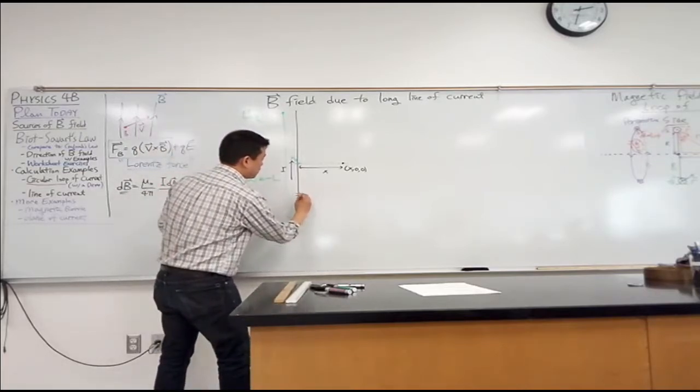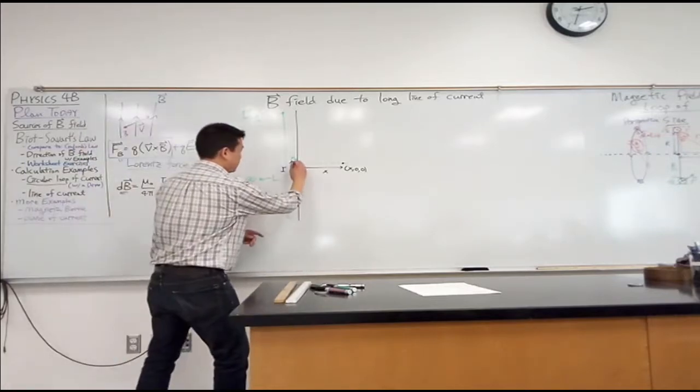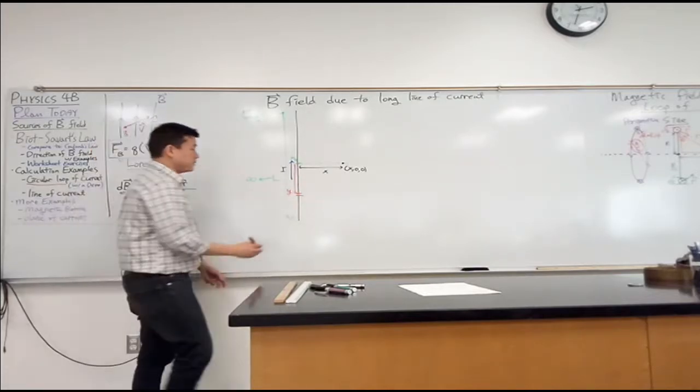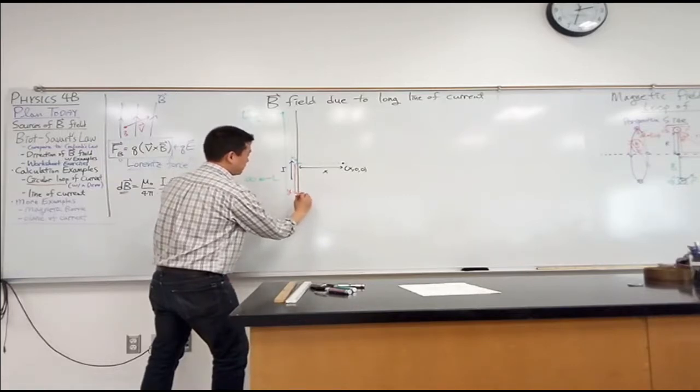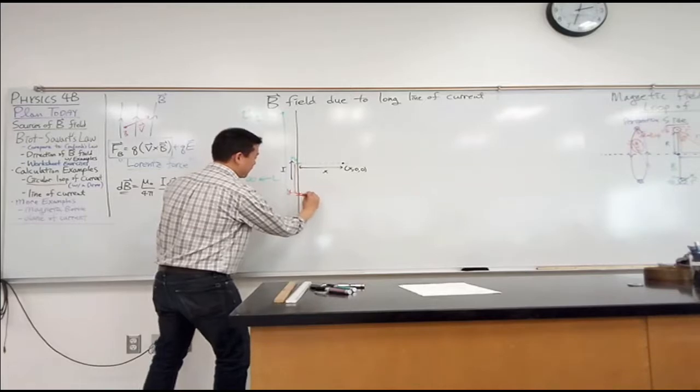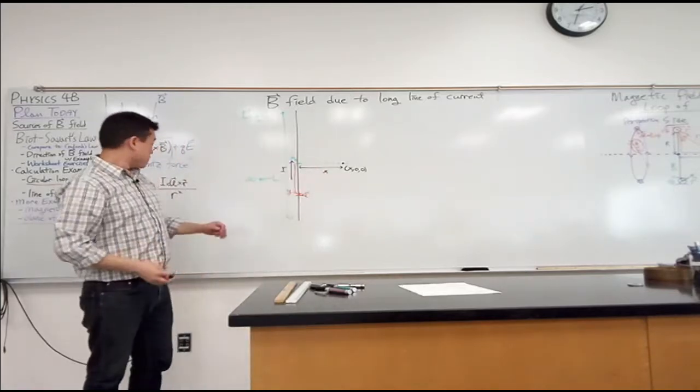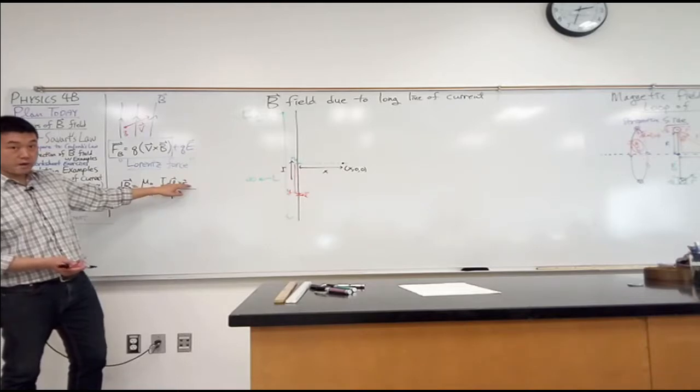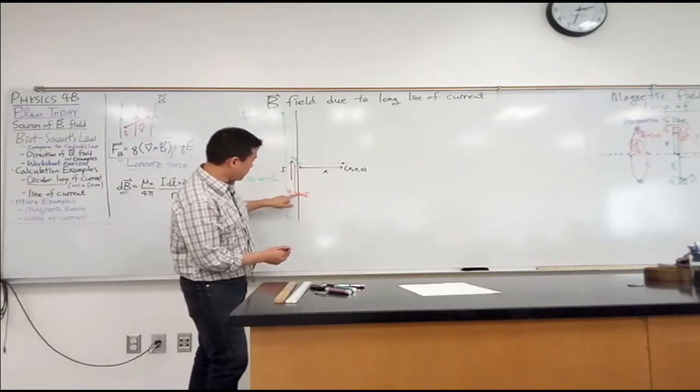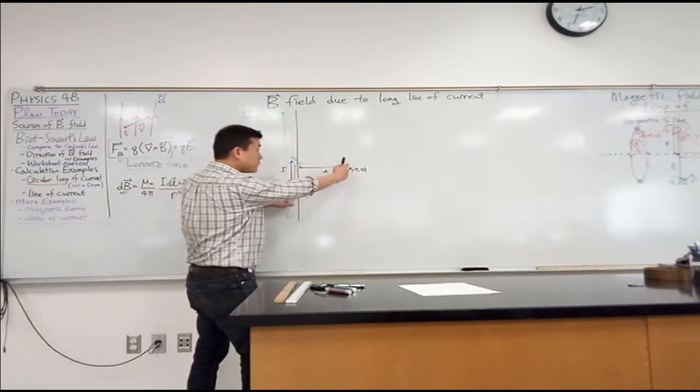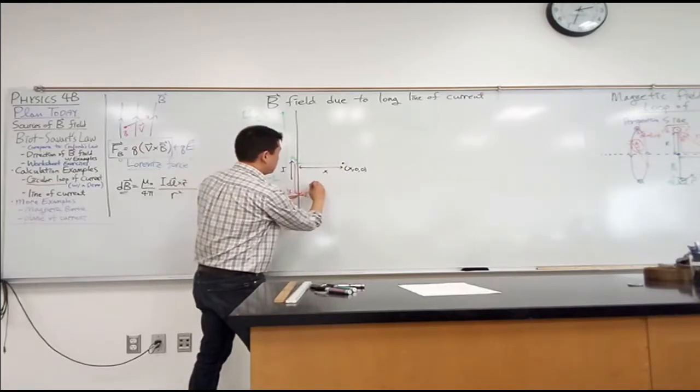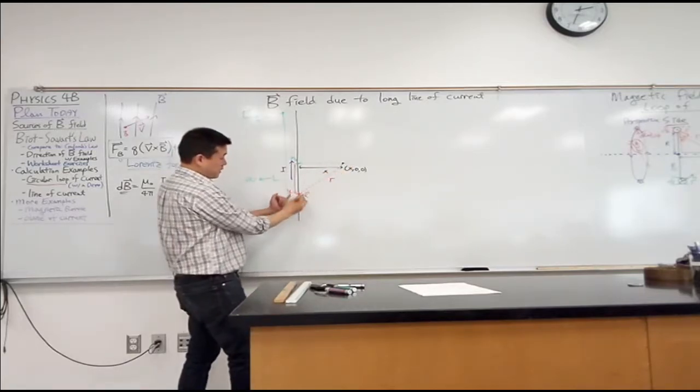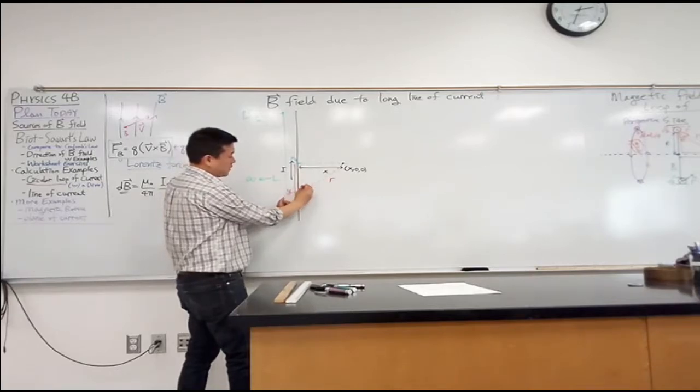I'm going to consider a small segment of wire here. Let's say this is located at some coordinate y and it has small length dl. This is my representation of dl - I'll draw it larger later when I need to figure out vector directions. I need to figure out r, that's also in Biot-Savart's law. r is the vector from the point source to the place where I want to calculate the magnetic field.